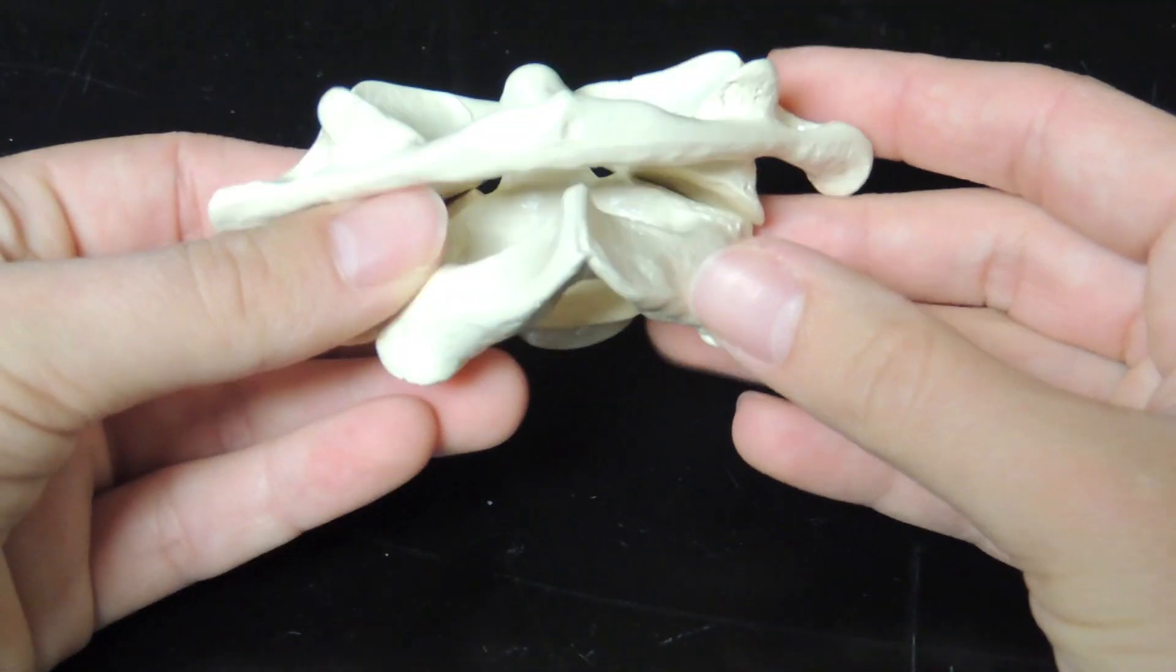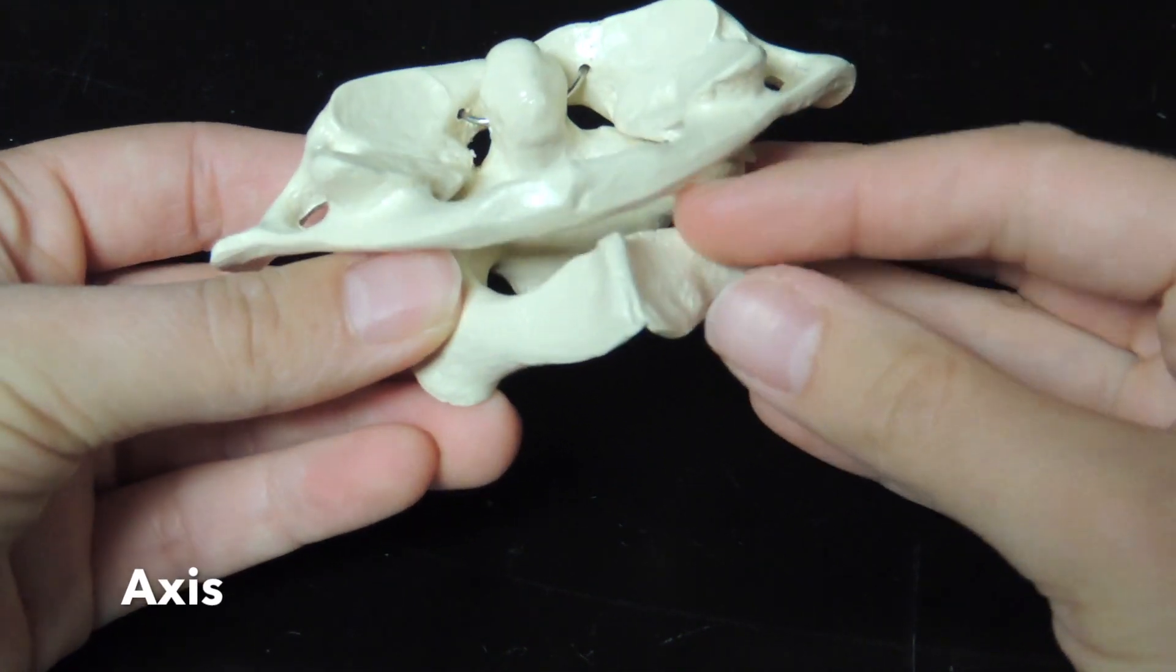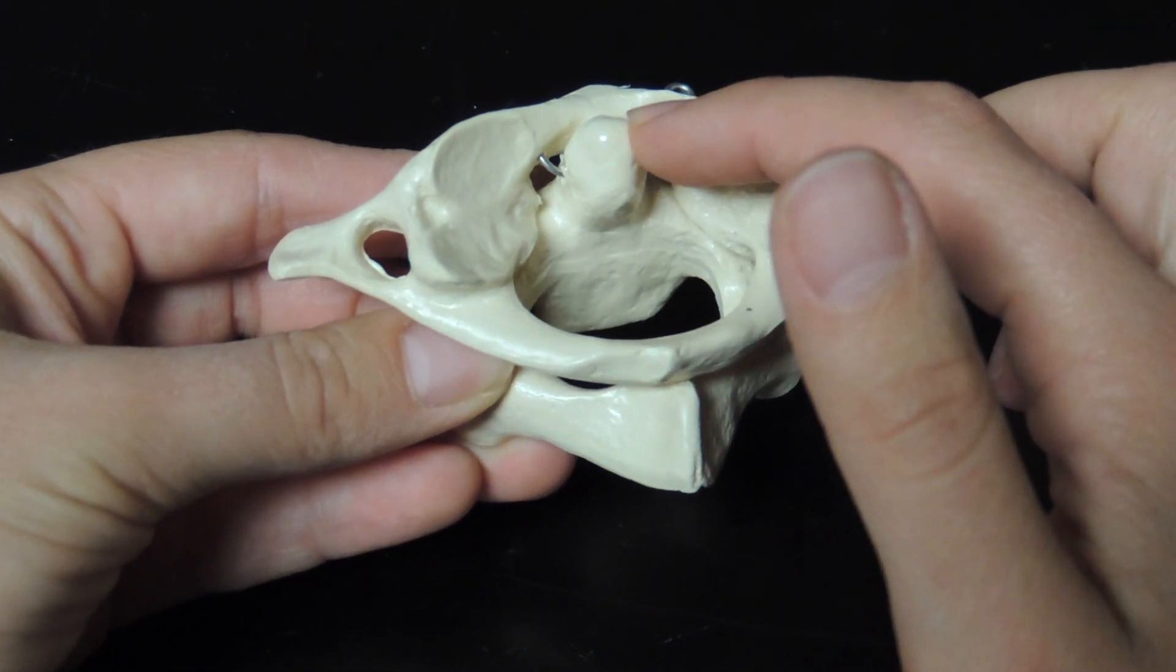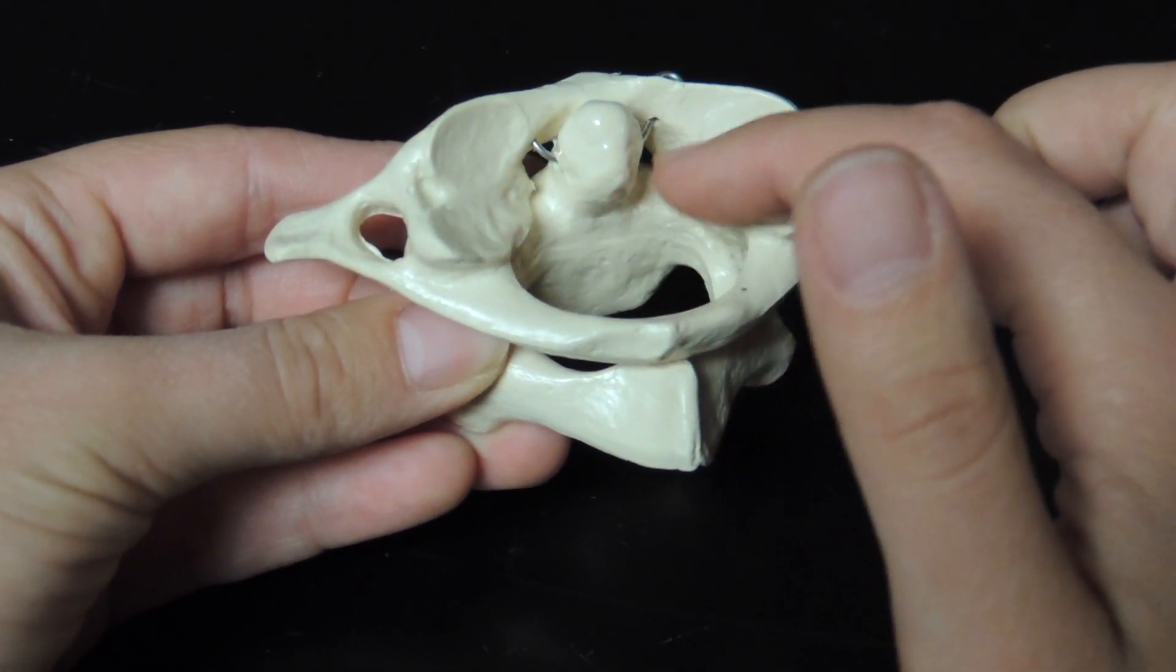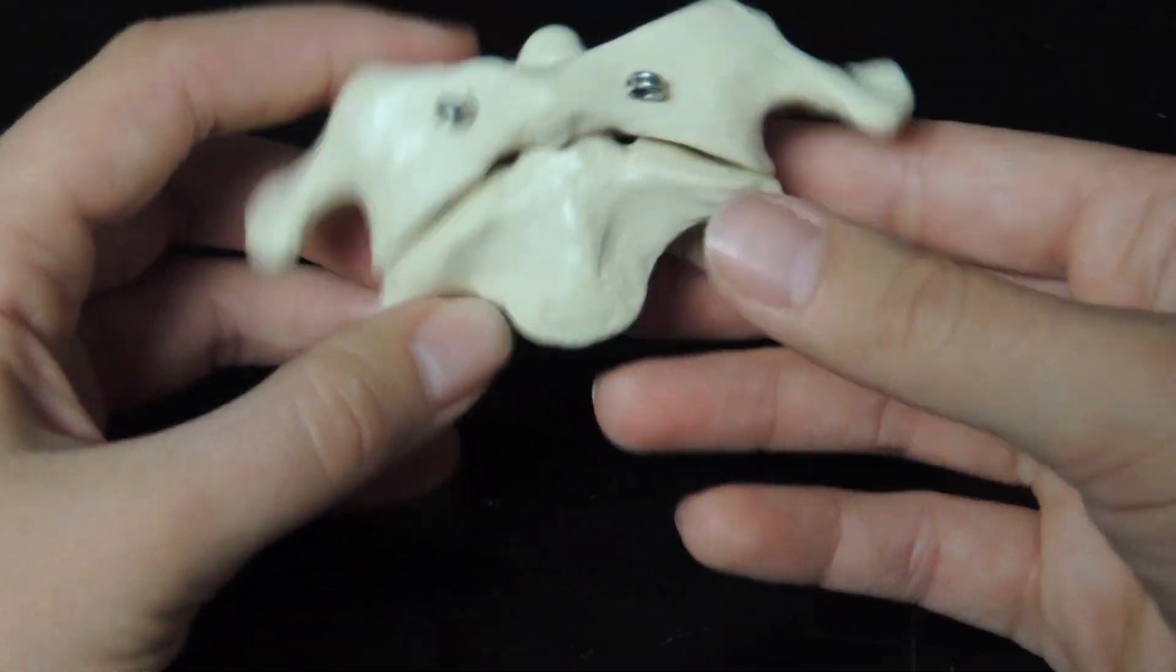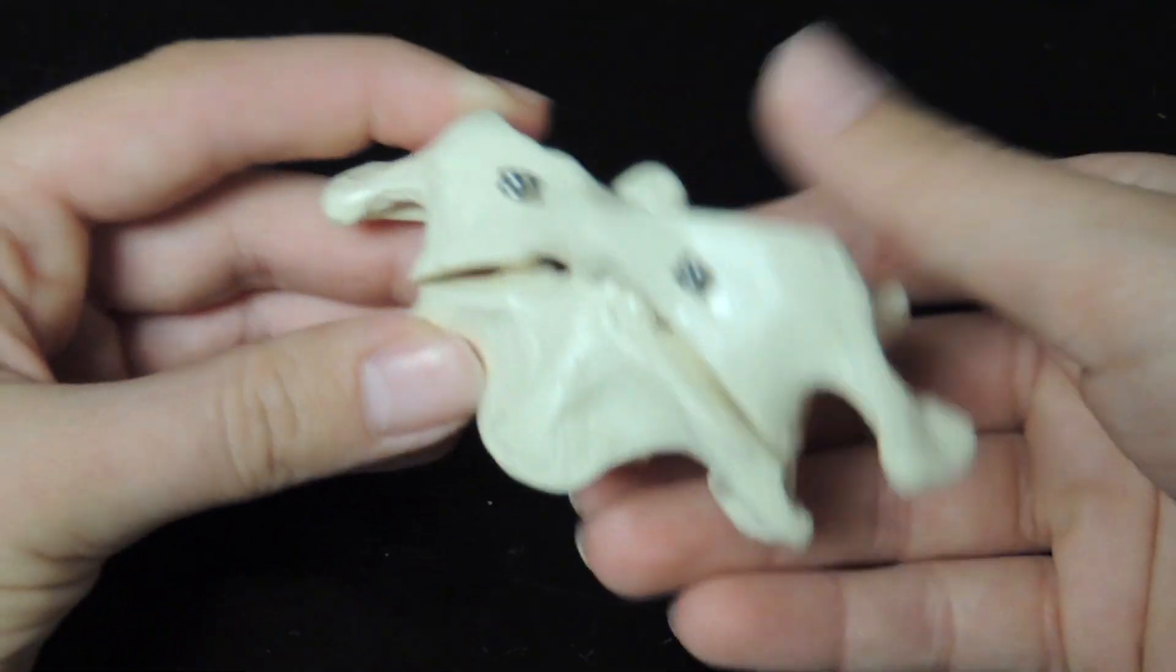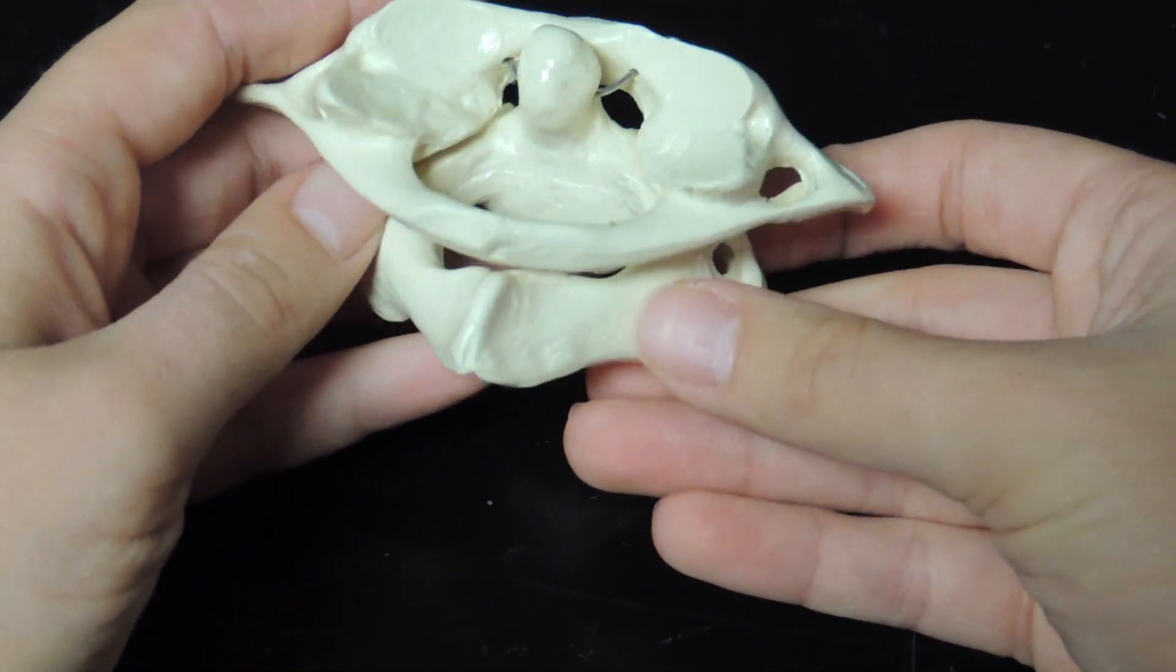The one on the bottom is the axis. We know this is the axis because of this process right here, called the odontoid process or the dens. This is an anterior view, and this is the posterior view.